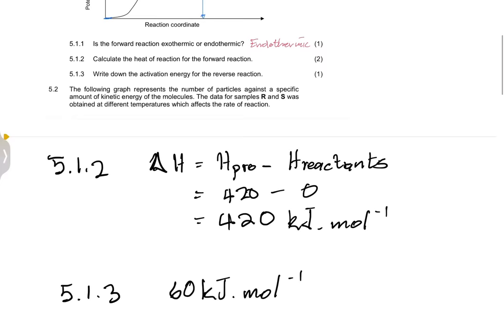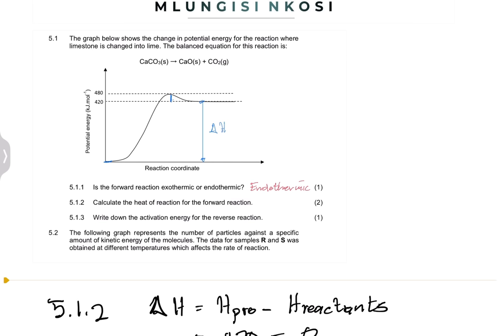For the forward reaction, the activation energy would have been 480, because you take from the peak down to where the reactants are. Let's skip to the next question, which is 5.2.